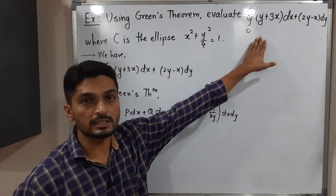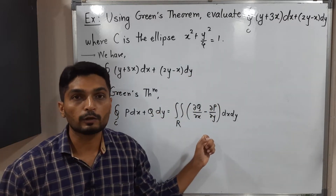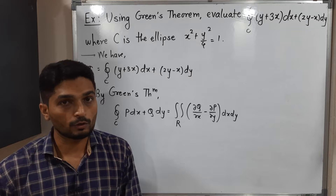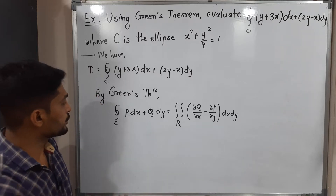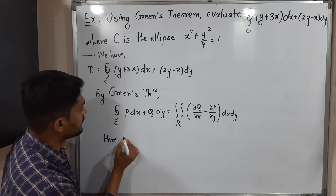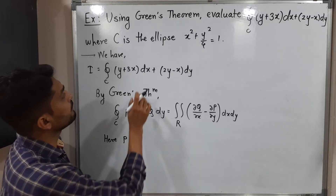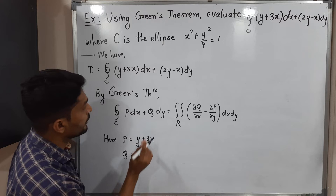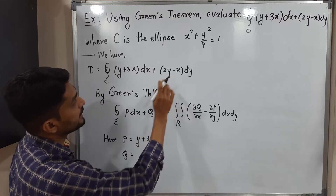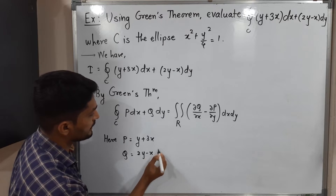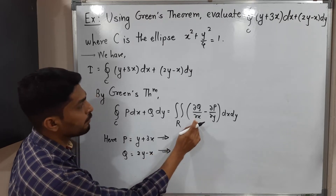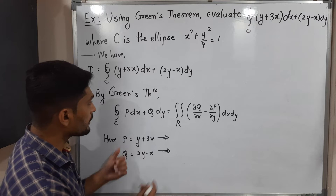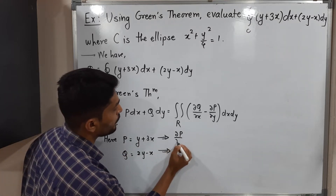We have to find the value of the right-hand side using Green's theorem. So let us find what P and Q are. Here P is the coefficient of dx, which is y + 3x. Q is the coefficient of dy, which is 2y − x. We want the values of ∂Q/∂x and ∂P/∂y, so let us find those partial derivatives.